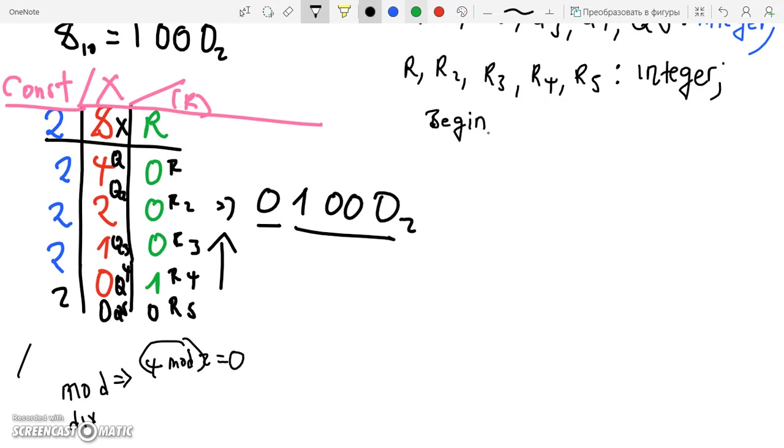And from here you can detect where the mods are. 4 mod 2 is 0, 2 mod 2 is 0, 1 mod 2 is 1, 0 mod 2 is 0. Everything is correct. I'm just going to draw something to divide this so it's going to be clearer.